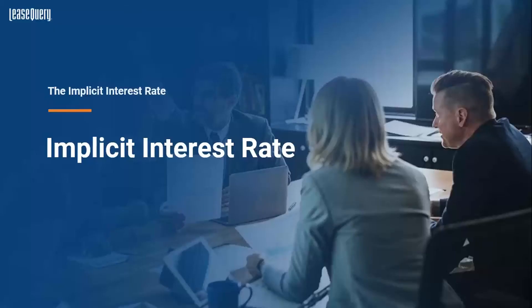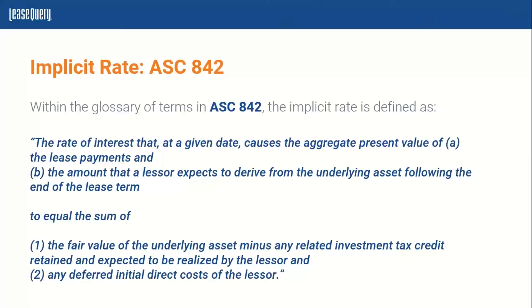Now let's talk about the implicit interest rate and how you would be able to calculate it — and really from the lessor side, how to apply that as well. Starting off with ASC 842, within the glossary of terms, the implicit rate is defined as the rate of interest that causes the present value of your lease payments and any amount the lessor expects to derive from the underlying asset at the end of the lease term — like an expected residual value — to equal the sum of your fair value of the asset minus any investment tax credit and any deferred initial direct costs.